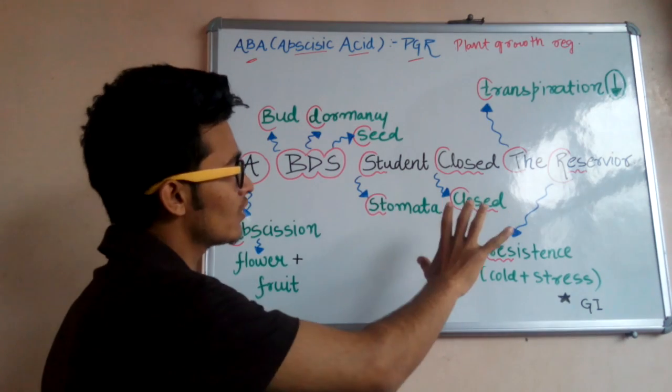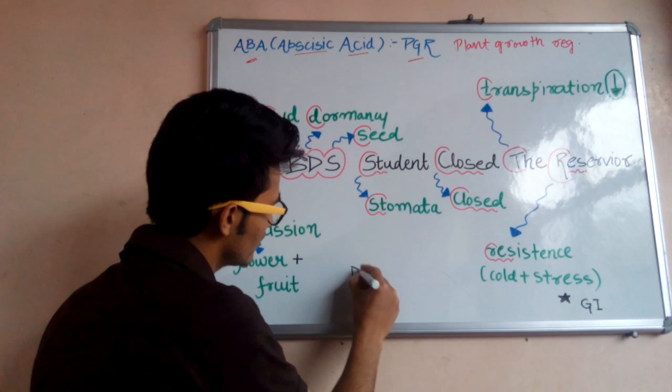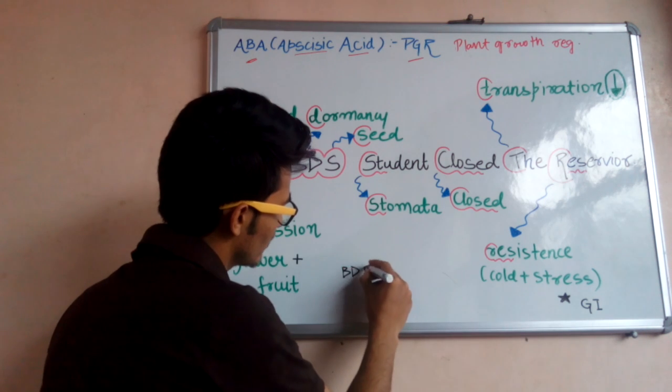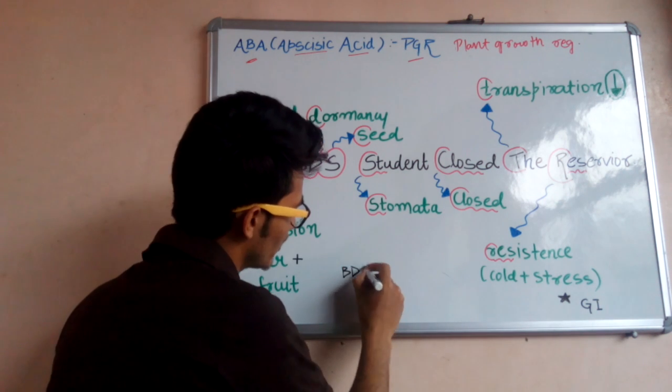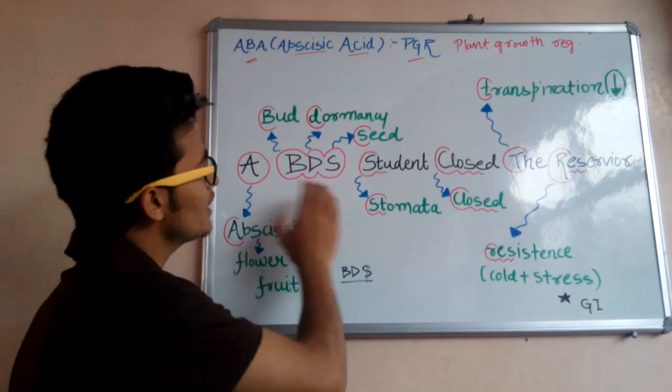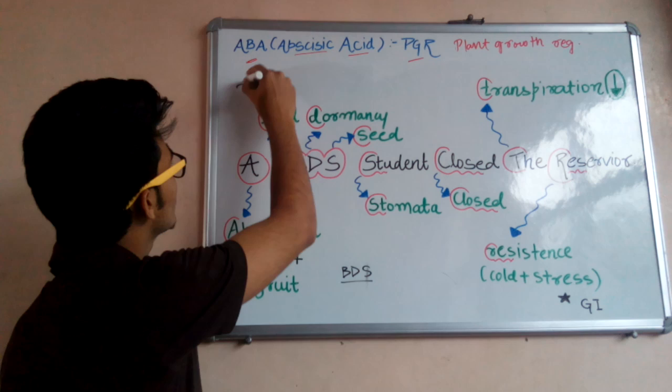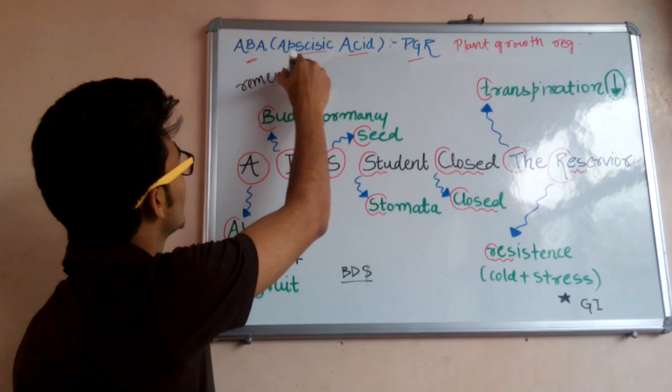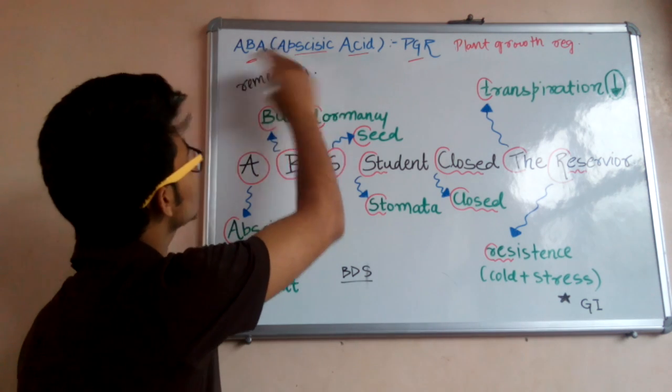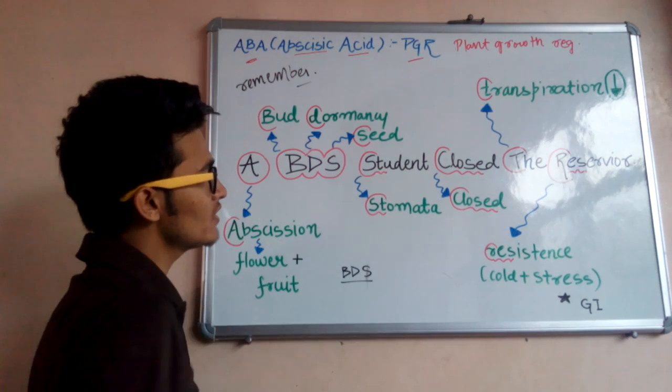So this is a very simple trick. You all know about the BDS, as you are all aware about the MDS BDS entrance examination. So, A BDS student closed the reservoir. How can we remember all the functions of abscisic acid from this particular trick?